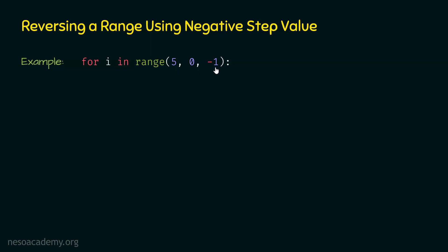This time we have a negative step value. When the step value is positive, say 1, we add 1 to the previous value to get the next value. In this case, with a negative step value of minus 1, in order to obtain the next number after the start value, we must add minus 1. So 5 minus 1 gives us 4. Then adding minus 1 to 4 gives us 3, and eventually we get numbers from 5 down to 1.